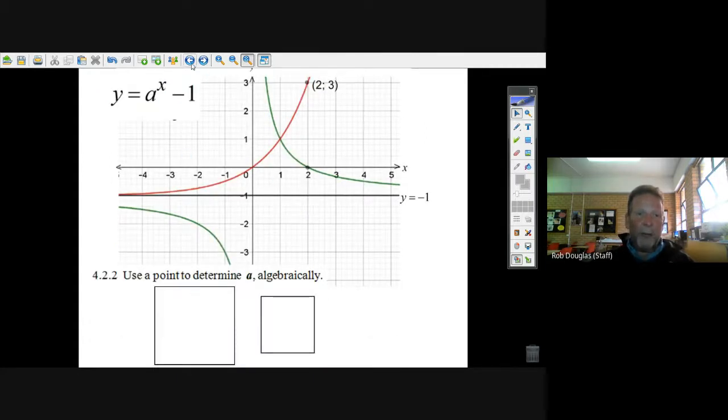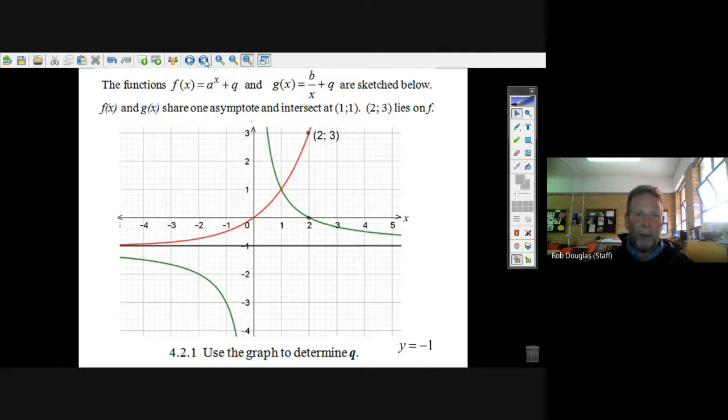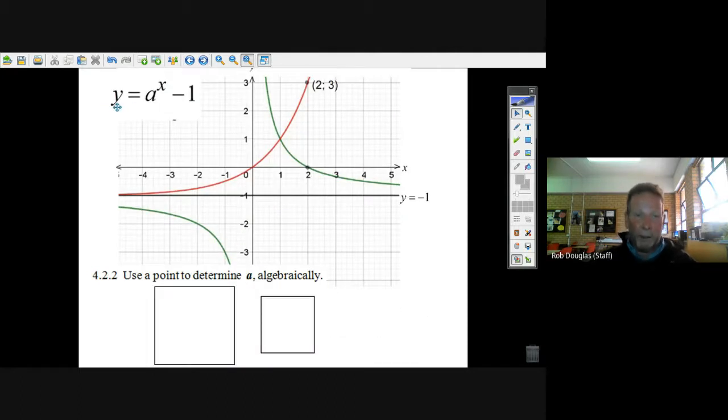Then it says, well, now we know that q is minus one. And f of x is really y. And now we're going to use this equation, y equals a to the x. Now we know q is minus one. Use a point to determine a algebraically.